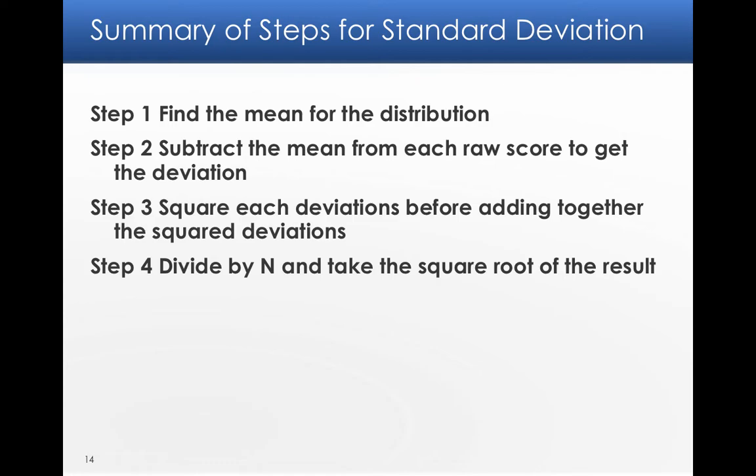So to summarize those steps, we're going to find the mean, subtract the mean from each raw score, square the deviations, add them together, divide by n, and then take the square root of the result.